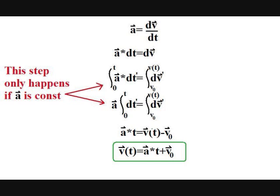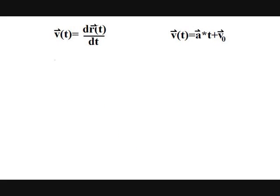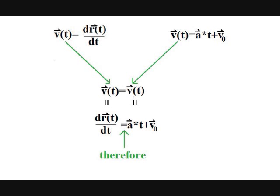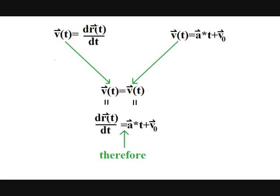Now recall that v of t equals the derivative of position with respect to time. Well, I am going to just substitute that into the equation we just derived, and now we again have a differential equation. We can separate the variables once again and integrate as before. The result is that position at time t equals initial position plus v naught t plus acceleration times time squared over 2.